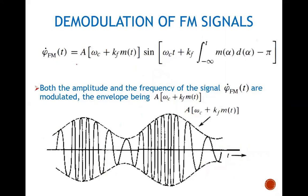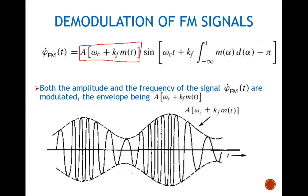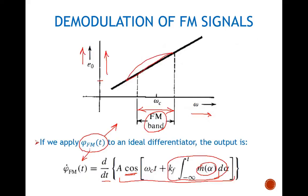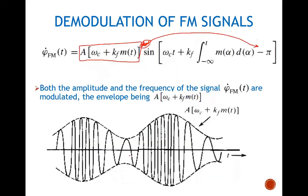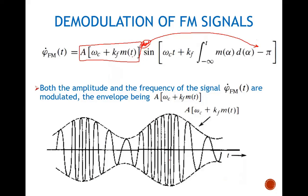When we differentiate the FM signal, the output equals a term where, instead of cosine, we get a minus sign — which has been removed using a trigonometric identity. The terms that were being multiplied with time t now appear at the output amplitude. So we have omega_c plus kf*m(t) in the amplitude. Instead of the integral, when we take the derivative of this term, we are left with the actual m(t).